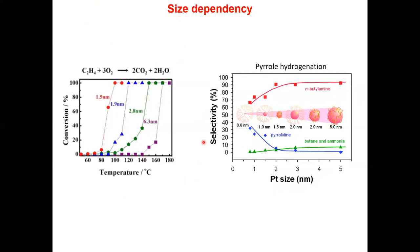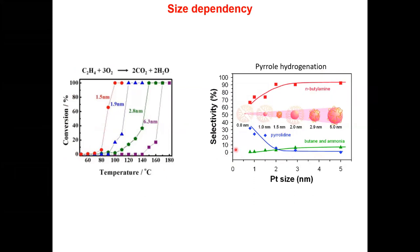For example, in the oxidation of ethane, if you have a 1.5 nanometer particle versus a 6.3 nanometer particle, there is a clear change in activity. Similarly, in pyrrole hydrogenation, the selectivity for products like butylamine or pyrrolidine changes based on the size of platinum particles — from 0.8 nanometer to 5 nanometer, activity and selectivity both change. This is what we call the structure-sensitive reaction.